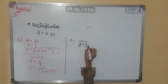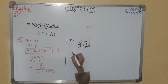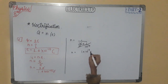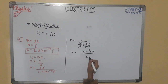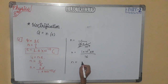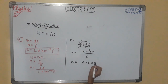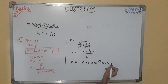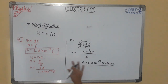Simplifying, we shift the terms: n = 1 × 10¹⁹ × (10/16). By simplifying the whole expression, we get the value of n, the number of electrons, equal to 6.25 × 10¹⁸ electrons.